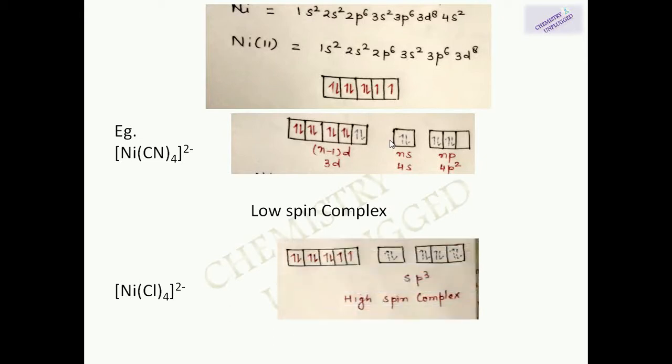Next is tetrachloronickelate(2-). In this complex, the 4 pairs of electrons from the ligand go into s and 3p orbitals, giving sp3 hybridization. The complex will be high spin because there are 2 unpaired electrons in the d orbital, so it is known as a high spin complex. However, valence bond theory was not able to explain why different complexes of the same metal ion are high spin or low spin — VBT was not able to explain it.